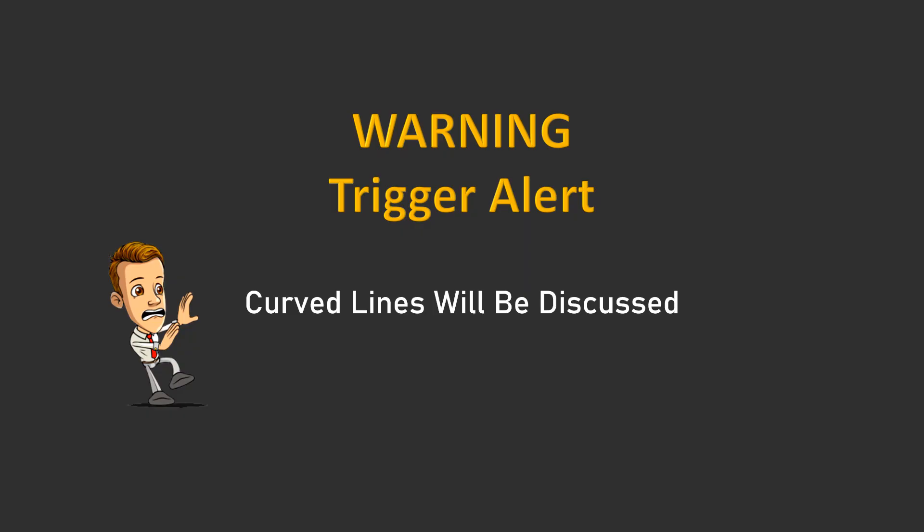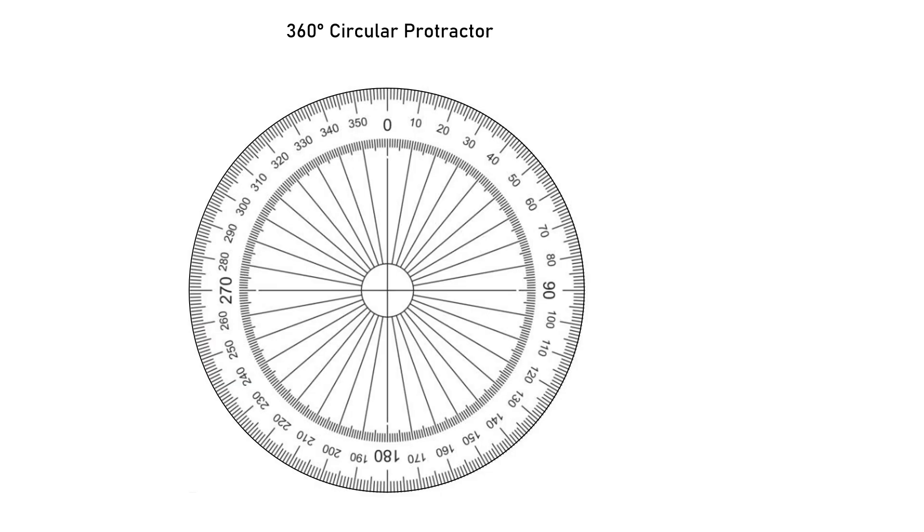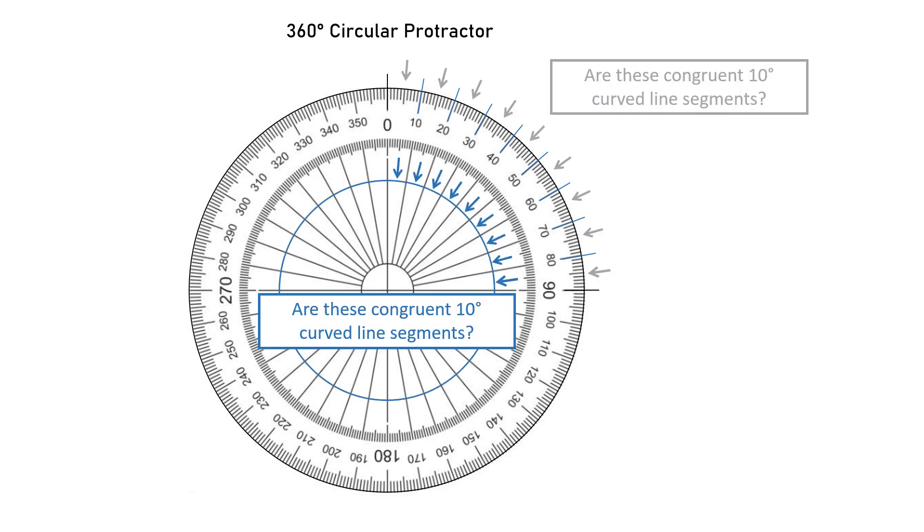Warning, trigger alert, curved lines will be discussed. Well, Bev, this is really not that difficult. Here we have a 360-degree circular protractor. So let's take a look at the first 90 degrees and ask the question, are these congruent 10-degree curved line segments? Looks like that to me. And what if we have a smaller circumference? Hmm, again, it looks like the answer is yes.